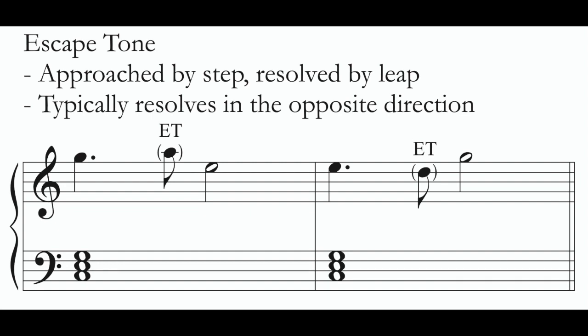The flip of the appoggiatura is the escape tone, sometimes referred to as the escapé. It is approached by step and resolved by leap — the opposite of the appoggiatura. Escape tones frequently resolve in the opposite direction. We can see that G steps upward to an A, A being the non-chord tone not belonging to my C major triad, and then leaps back down to E for its resolution. Likewise in the second measure, E steps to D, D being a non-chord tone, and then leaps up to G. I've used the shorthand ET to label escape tones.